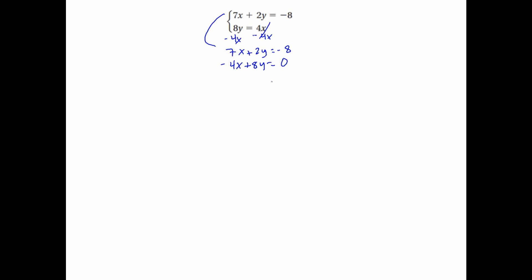So now we have to use elimination again. Substitution also works if you're comfortable with it, but elimination works well here. I know I can multiply by 4 to get 8, but I want it to be opposite, so I'll multiply by negative 4. That gives 7 times negative 4 which is negative 28x. 2 times negative 4 is negative 8y, equals negative 8 times negative 4, which is 32. Going straight down, I get negative 32x. Those cancel out, and 0 plus 32 is 32. Divide by negative 32 on both sides — that equals negative 1. So x equals negative 1.